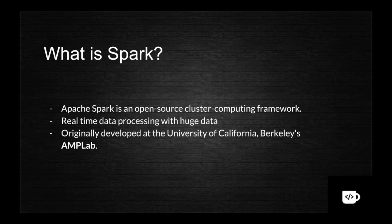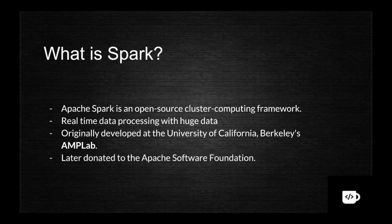Initially Spark was developed by people from the University of California at Berkeley, in something called the AMP Lab. They created the Spark framework there and later moved it to the Apache Foundation. That is why it is now called Apache Spark - initially it was just called Spark. There are now lots of active community contributors and it is growing day by day, becoming one of the highly valued frameworks in the big data world.